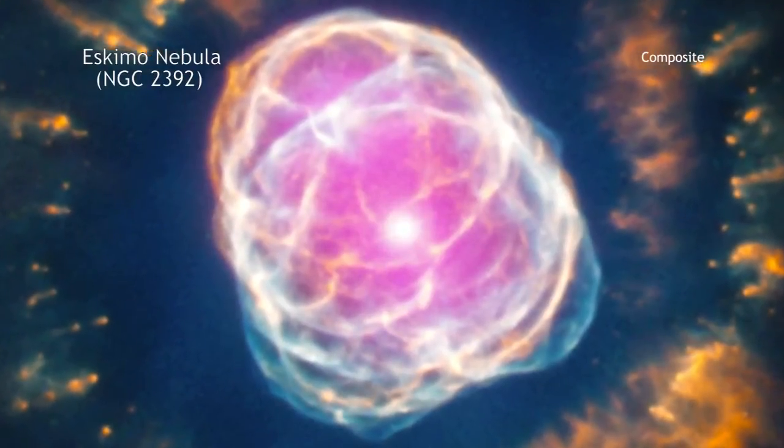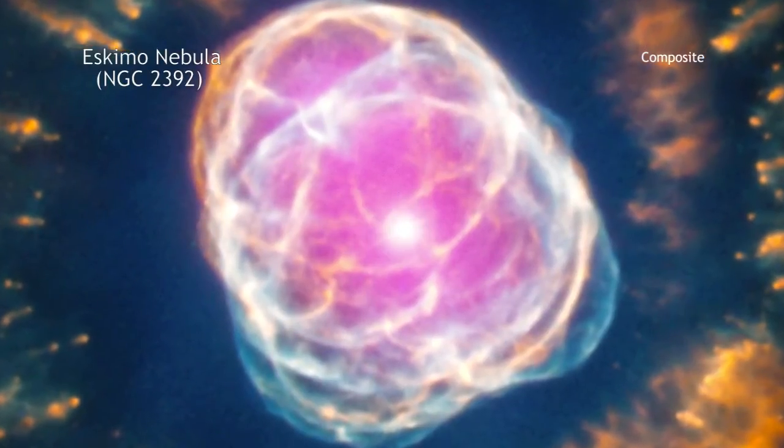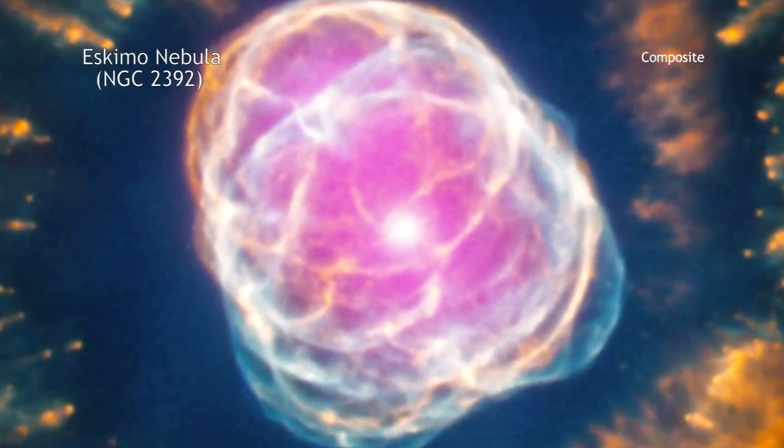Instead, planetary nebulas form when a Sun-like star uses up all of the hydrogen in its core, which our Sun will in about 5 billion years.